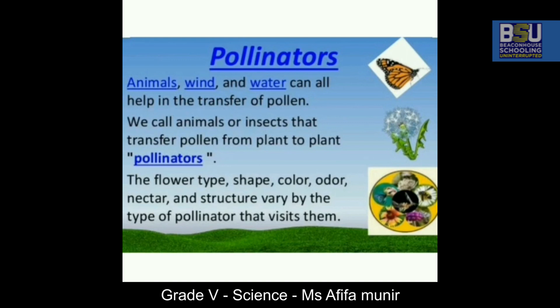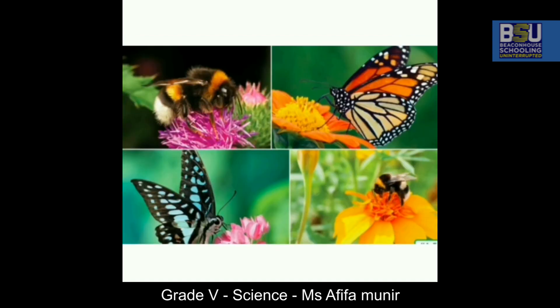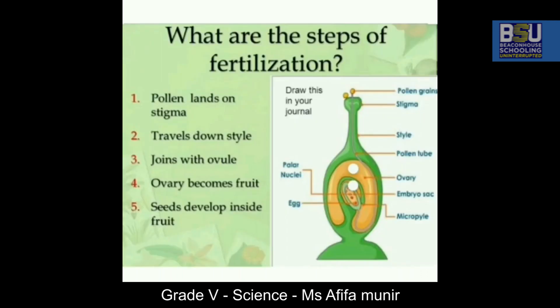The flower type, shape, color, odor, nectar, and structure vary by the type of pollinator that visits them. You see butterflies on very beautiful flowers. Honey bees are the most common pollinators — they come to take nectar.